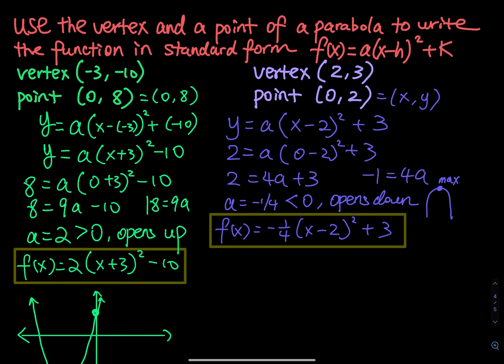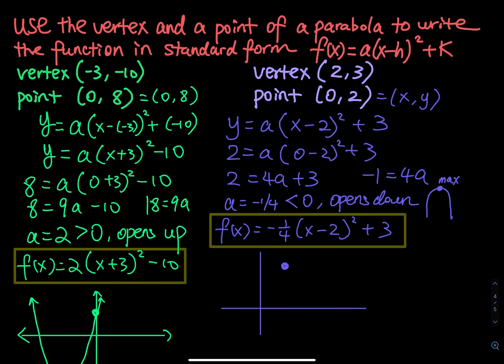How about the graph? For the graph, you have to graph the vertex first. The vertex is at 2, 3. Here is the x-axis and the y-axis — x equals to 2, y equals to 3. And then when x is equal to 0, y is equal to 2. So we graph the point 0, 2 and then sketch the parabola — this is half the parabola and then the other half.